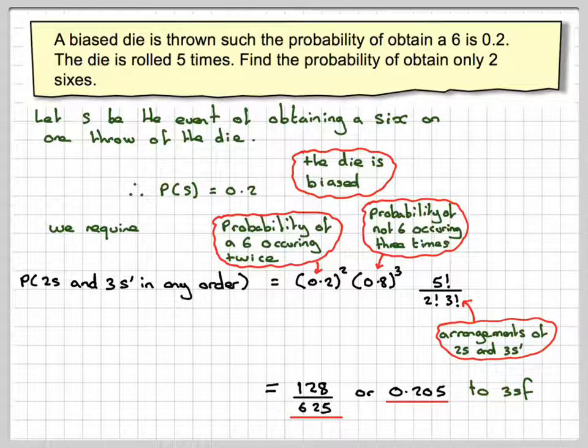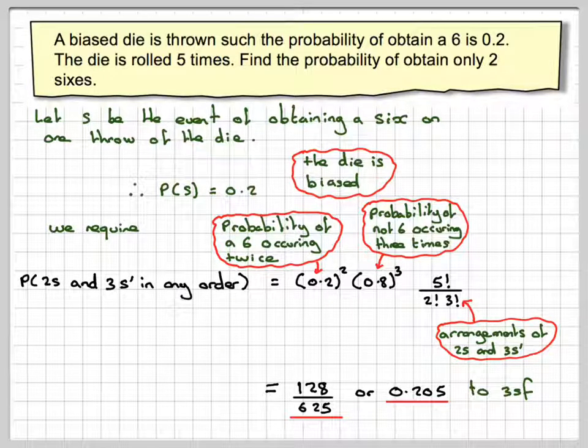Okay, so this has been a question to show you how to find probability where you have to consider the number arrangement of something happening. I hope you've understood, and I thank you very much for watching.